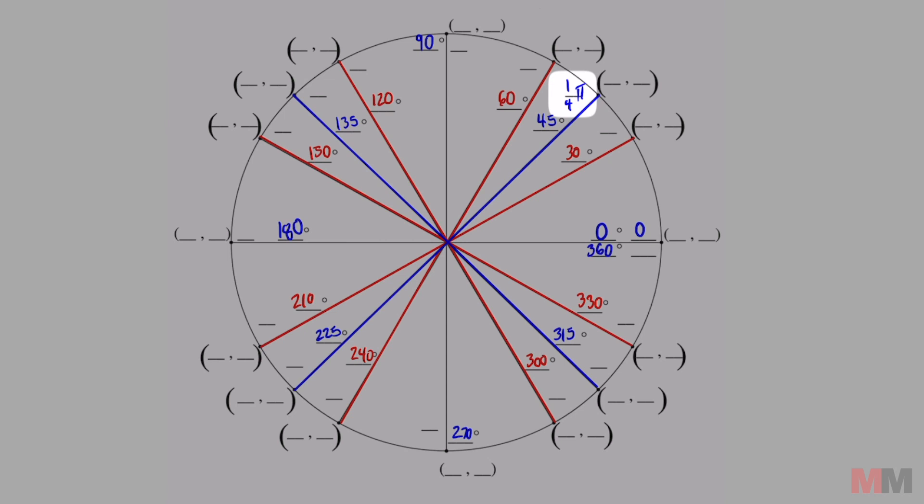And you're going to have to simplify in your head because the next one is going to be two over four and two over four is the same as one-half pi. Three over four. Four over four is the same as one pi.